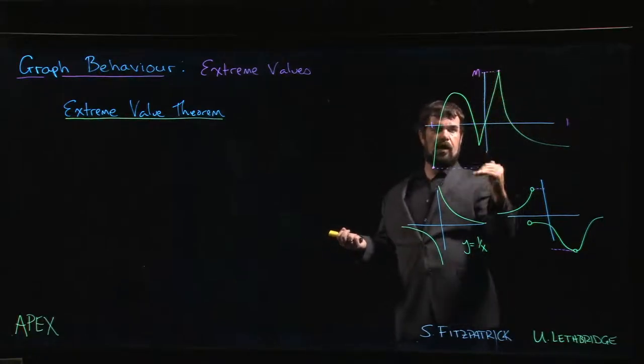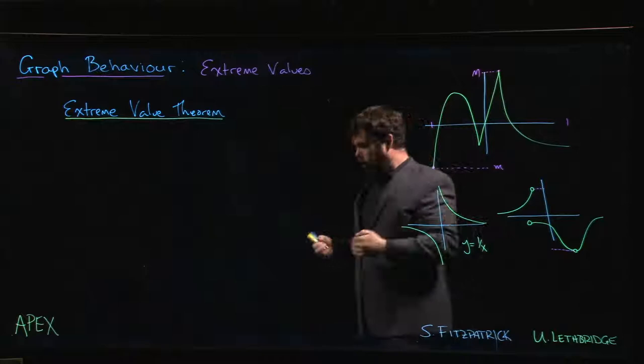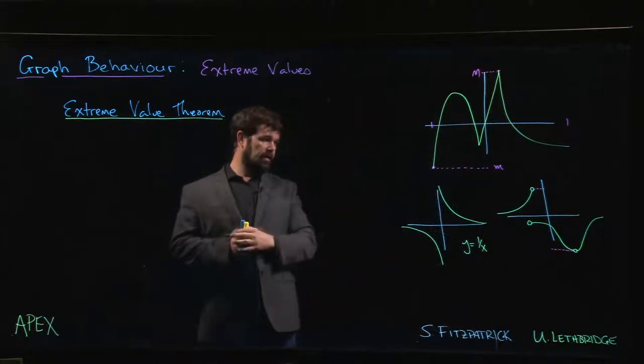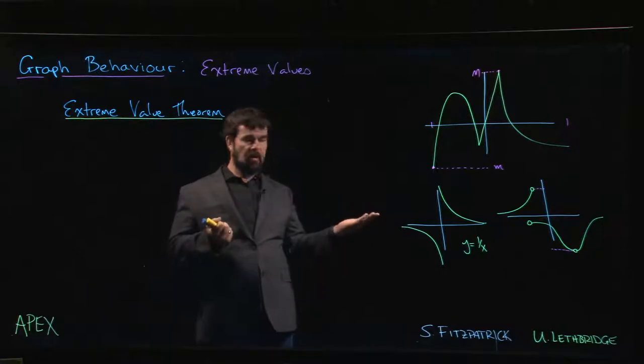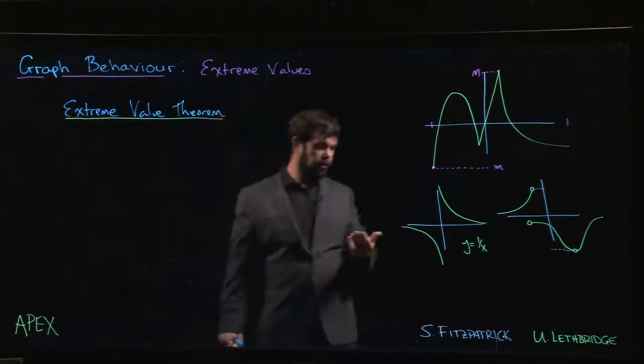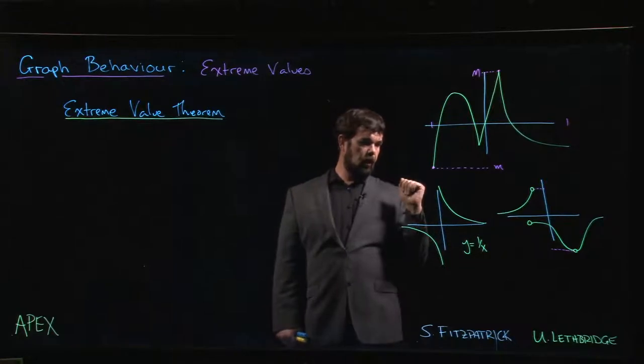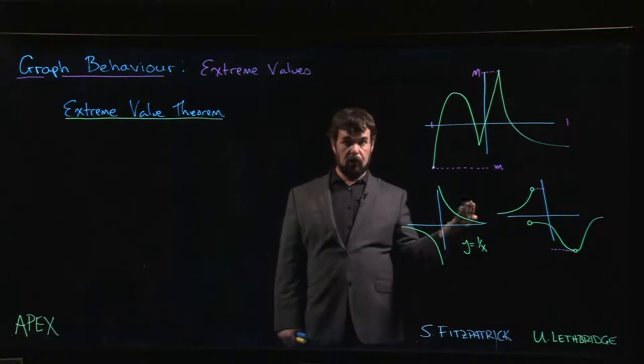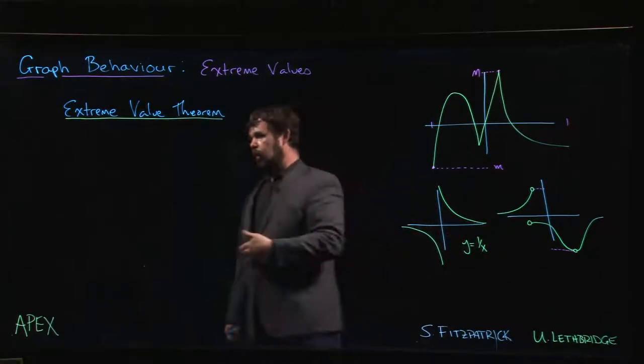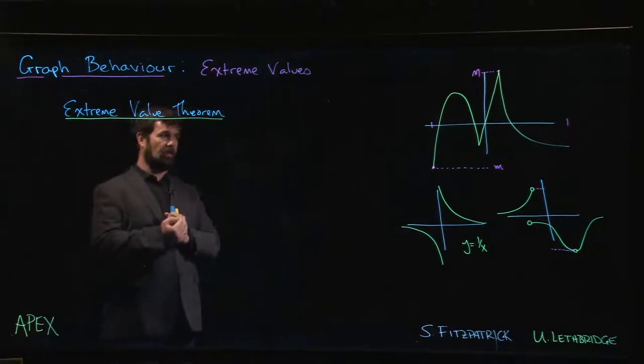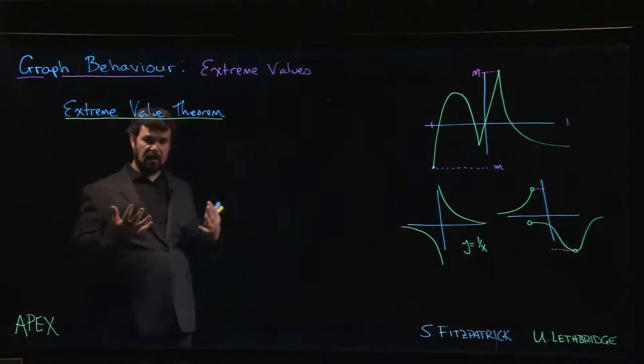And we also looked at these other examples. We said, you know what, these aren't guaranteed. We could have a function like this or like this where we don't actually see those absolute max values. And so then you get wondering, like when do you actually get these extreme values? We'd like to find them, but before we go trying to find these values we want to know that they're there.